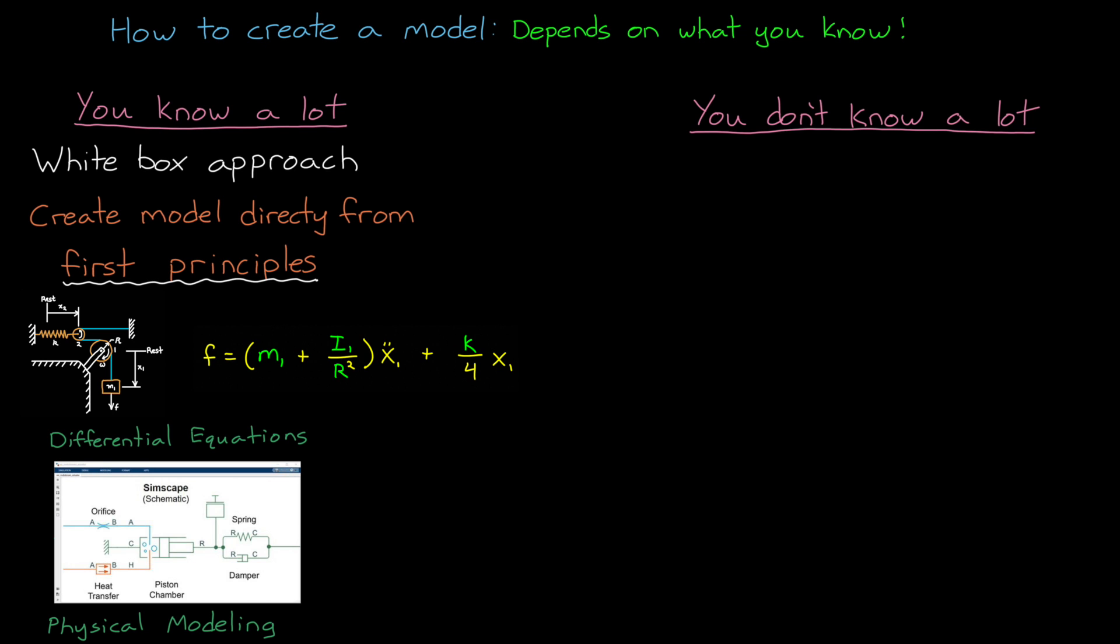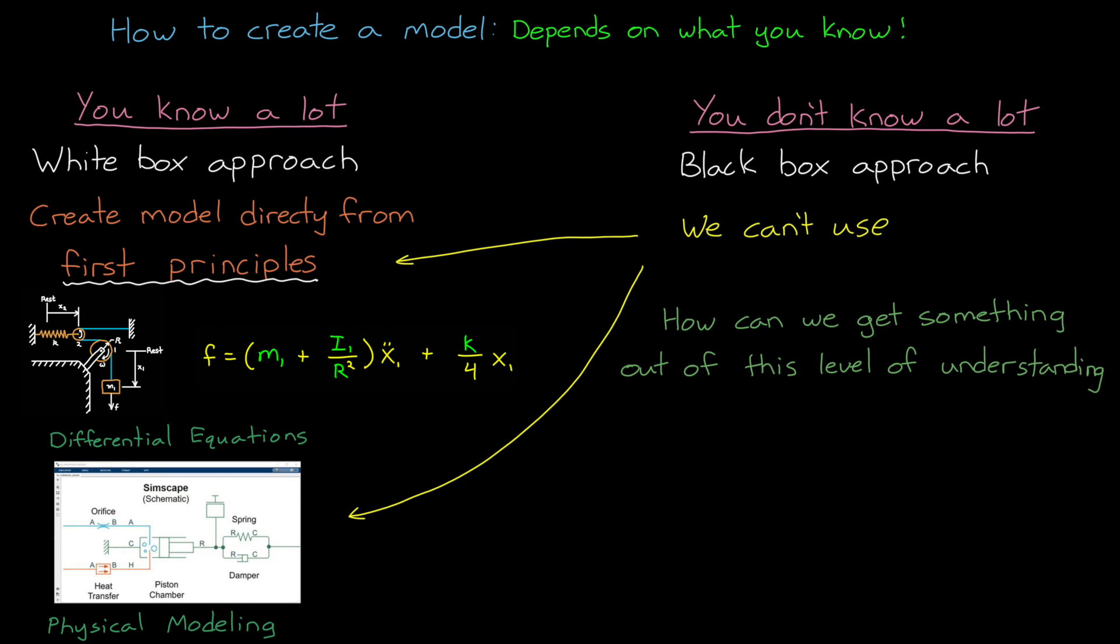On the opposite side of the spectrum is the black box method. This is where you have no idea what's inside the box because you can't see into it, and therefore you can't use first principles or physical modeling programs to capture the essential dynamics. You might not even know what the essential dynamics are. So how can we get something out of this level of understanding, where we can't write the equations directly? Well, this is where system identification comes into play.